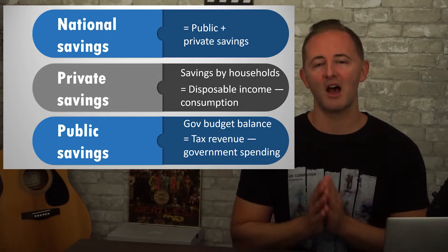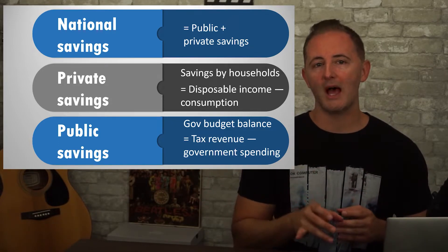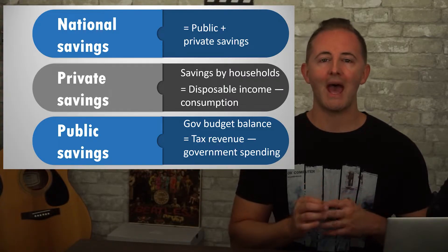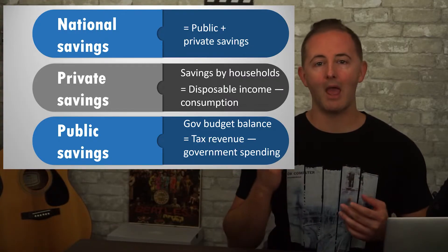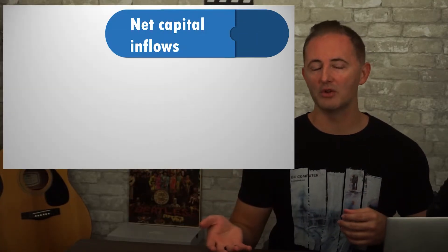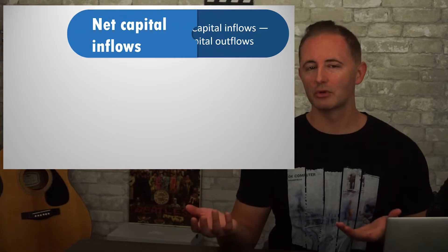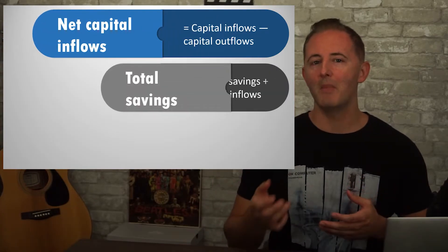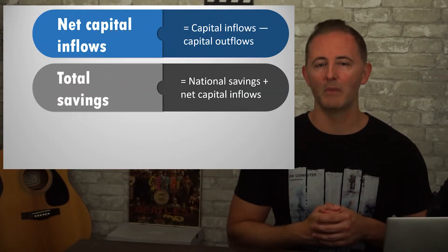In a closed economy, to find the total supply of savings available, we just add private and public savings. If it's an open economy, the supply of savings is equal to national savings plus net capital inflows, which is really just a jargony way to describe money being saved internationally.